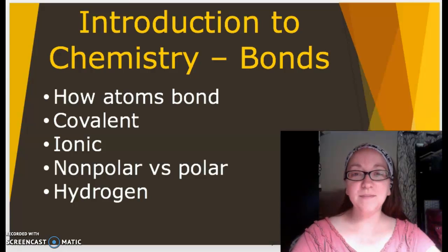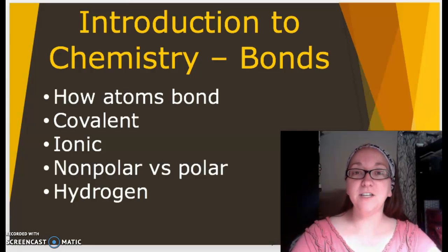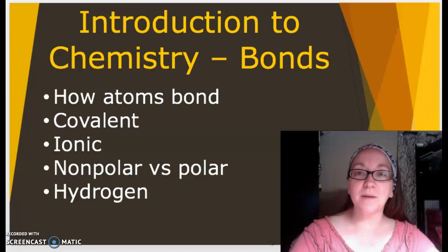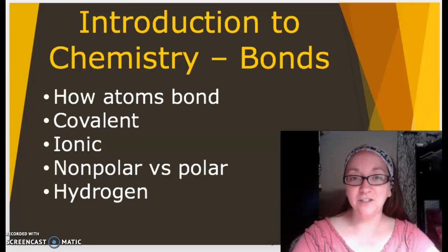Hey y'all, it's Miss Welch. Let's have a discussion about chemical bonding. In chemistry, a bond is an attraction, an electrical attraction, between two elements. There are several different types of bonds. We're going to talk about covalent, ionic, the difference in nonpolar and polar bonds, and then hydrogen bonds. So let's get started.